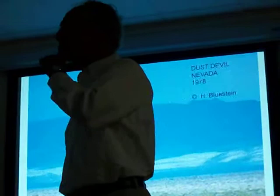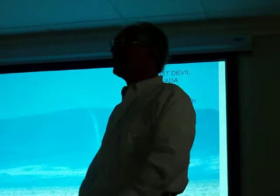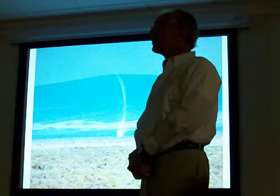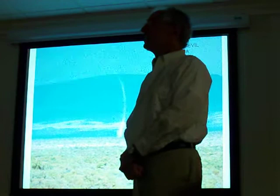Is there a difference between dust devils and landspouts? You can make a distinction. Landspouts occur under a growing cumulus cloud and the source of vorticity is pre-existing in the boundary layer. For a dust devil, you have dry convection, but there are arguments about what the source of vorticity actually is.